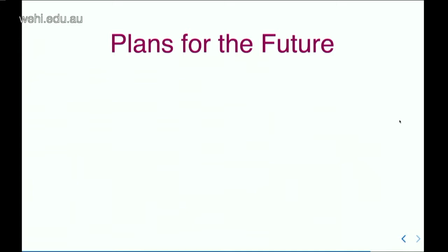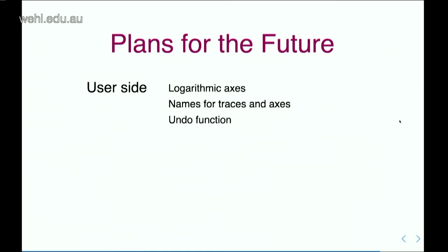My plans for the future: I want to have logarithmic axes. I want to give the user the ability to name all the traces and axes so that once they import it into their plotting tool, that understands it and can plot it directly. An undo function, which I've partially implemented and then given up on — right click and the last dot disappears. I got too ambitious; I wanted to right click all the way through to the first data point, and that broke it.